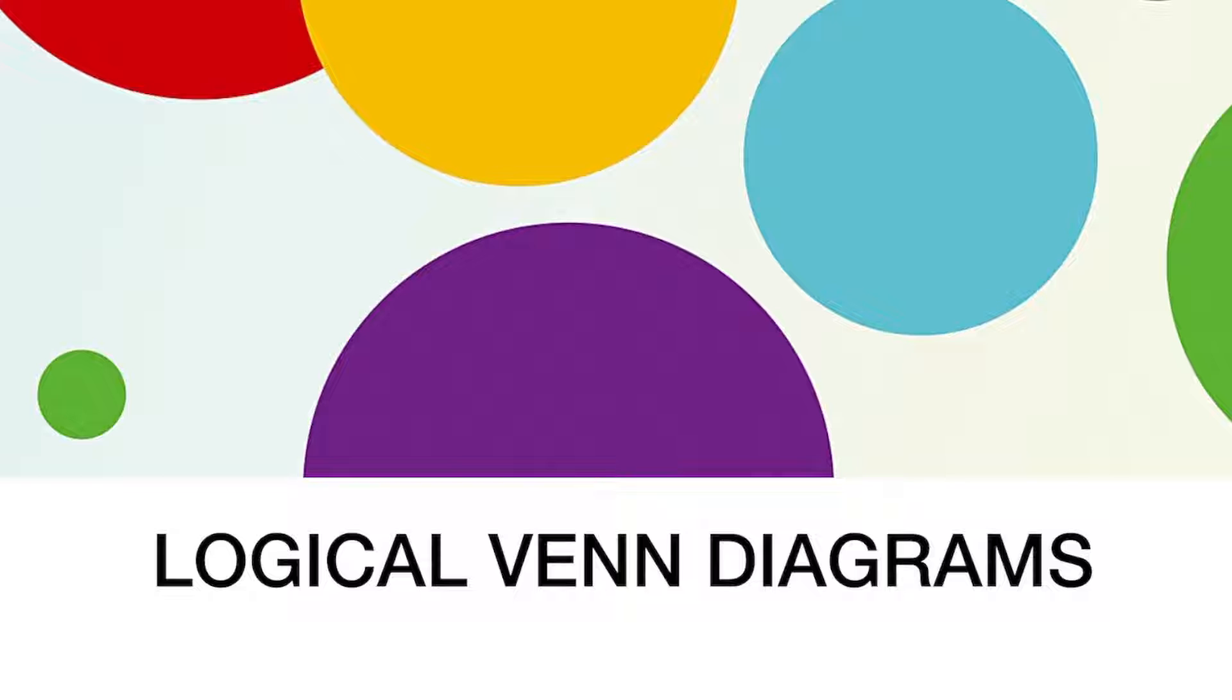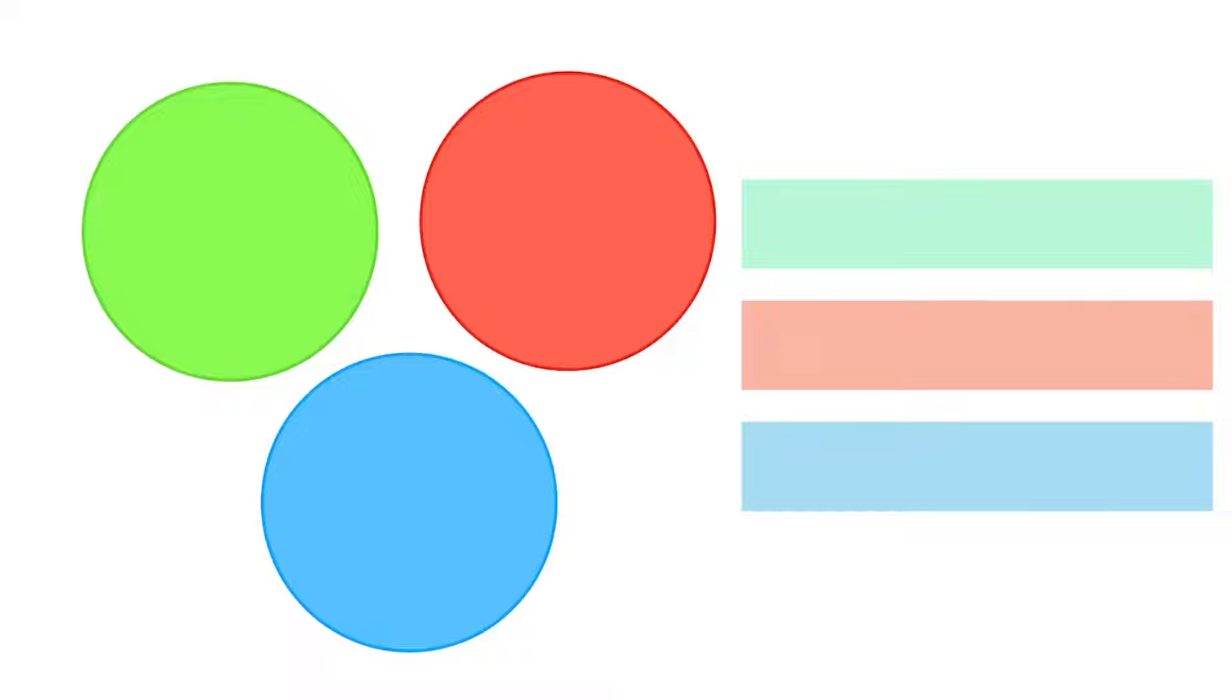Logical Venn Diagrams. Let me explain this with some diagrams. Here, each circle represents a class and these classes are independent of each other. Something like for green, I can write it as apple and for red,